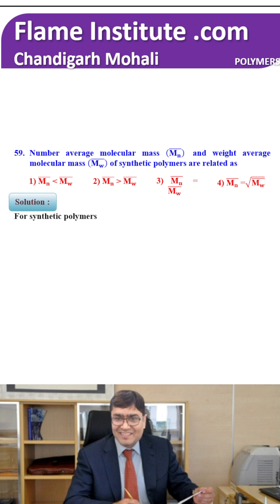The correct option for synthetic polymers: we know that PDI is equal to molecular weight upon molecular mass, which is greater than 1. That means molecular weight (Mw) is greater than molecular mass (Mn), so Mn is less than Mw. Therefore, the first option is the right option.